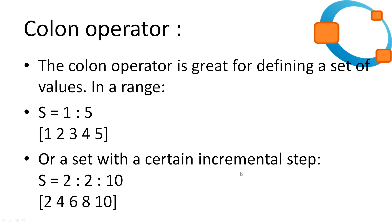I dedicated a slide to the colon operator because it's very useful. We can use it to define a set of values. We can create a set range with a start and an end — so 1:5 gives us a vector of 1 to 5. We can also specify the increment amount: 2:2:10 will increment from 2 by 2 every step until we reach 10, giving us a vector of 2, 4, 6, 8, and 10.